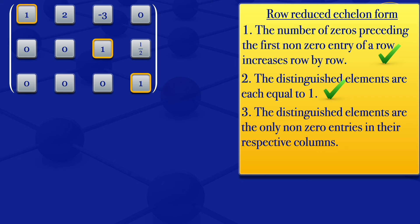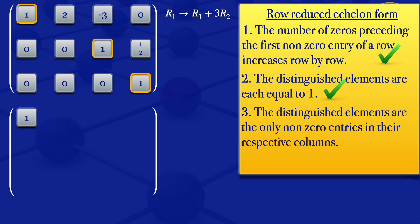So let us try to get a zero where we have the minus three. We can use this one here. When we have a minus three and need a zero using the one, we multiply the one by three then add it to the minus three. So we transform row one to row one plus three times row two. We multiply row two by three then add to row one: one plus three times zero gives one; two plus three times zero gives two; minus three plus three times one gives minus three plus three equals zero; zero plus three times one over two gives three over two.